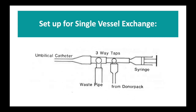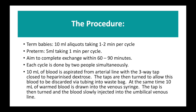If you haven't got an arterial line, you put two three-way taps together on the venous system: one syringe draws blood from the baby, then turning the taps you squirt it down the waste pipe, then draw blood from the donor pack and turn the taps again to inject it back into the baby. In term babies we usually use 10 ml aliquots taking around one to two minutes per cycle; in preterm babies, 5 ml aliquots taking one minute per cycle. The aim is to complete the exchange within 60 to 90 minutes, with usually two people working to take blood off and put blood in simultaneously on each side of the circulation. We aspirate from the arterial line with the three-way tap closed to heparinised dextrose, then turn the taps to discard the blood, while simultaneously 10 ml of warm blood is drawn into the venous syringe and slowly injected into the umbilical venous line.